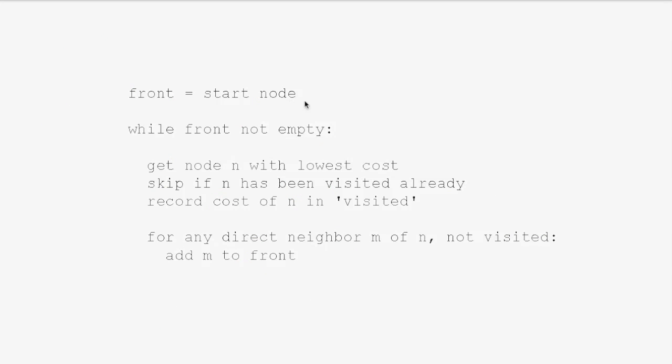Now let's have a look how this influences our algorithm. Here is our algorithm as we programmed it earlier. There's two places where we interact with our front in the main loop. First of all, here we get the node N with minimum cost. This is the place where we so far searched the entire list for the minimum node. And down here, we add a neighbor to front and we just append it to the end of the list so far.